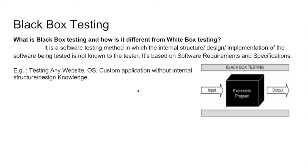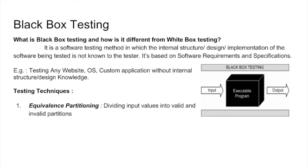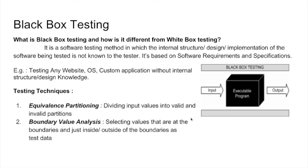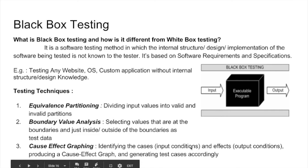Now let's see about testing techniques. The first one is equivalence partitioning — the input values are divided into valid and invalid partitions, and representative values from each partition are taken and tested. The second is boundary value analysis, where the boundary of the system is determined and the values that lie at the boundaries and just inside or outside the boundaries are taken and tested. The third is cause-effect graphing, where we identify input conditions and output conditions (effects), produce a cause-effect graph based on that, and generate test cases accordingly.